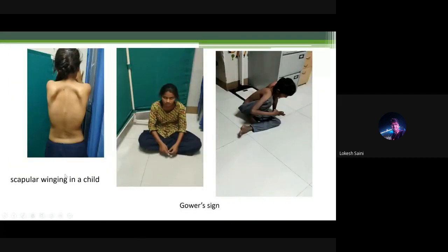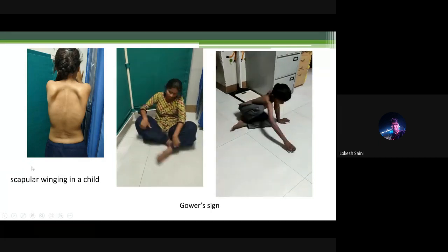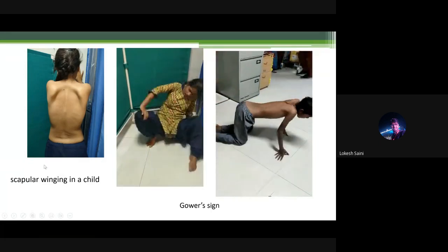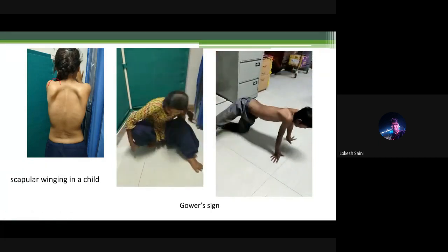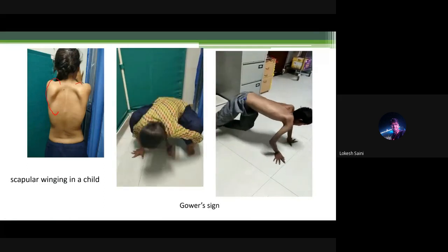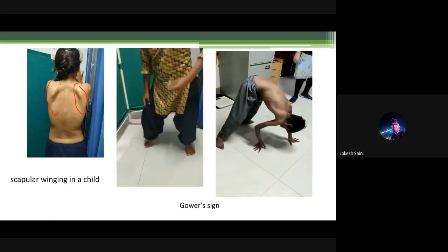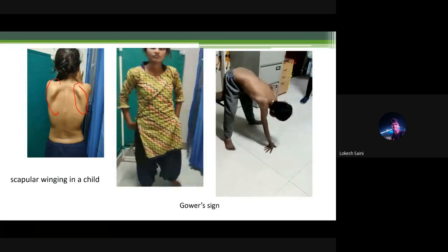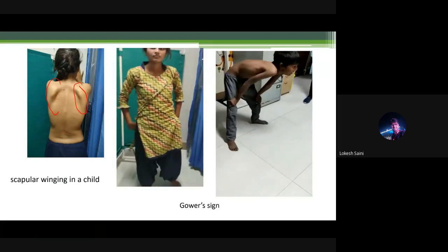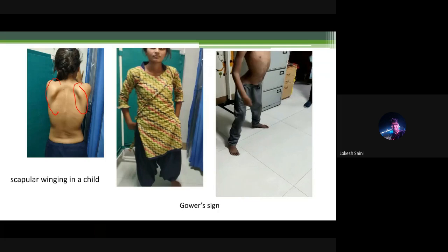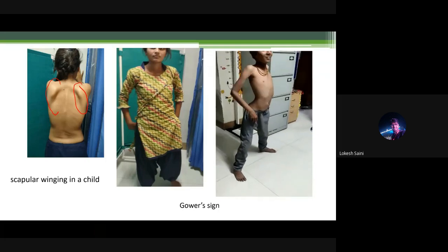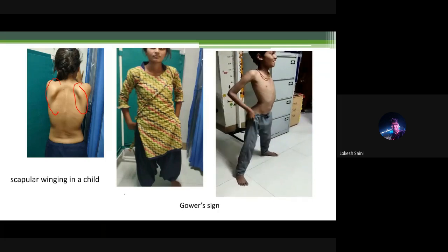Regarding what scapular winging looks like: in the photograph, this is classical scapular winging — when the child is asked to push on the wall, the scapulae come close to each other and become prominently visible. Two videos are shown carefully demonstrating this.